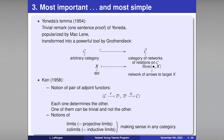A basic fact of adjoint functors is that if you know one of them, the other is uniquely determined. Often, one functor is trivial to define while the other is subtle. This notion provides an extremely general device to define interesting functors in mathematics, including the notions of limits, or projective limits, and co-limits, or inductive limits — also introduced by Daniel Kan.